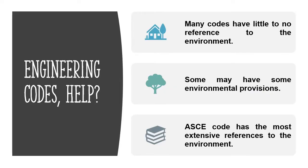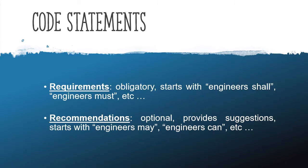The instinct of any good engineer is to seek help on the matter from engineering codes. Unfortunately, many codes do not have a sufficient amount of references to the environmental issues that we are facing today. They may contain some provisions but nothing definitive. The ASCE code is the code with the most environmental considerations and can be used by engineers from any other major as a guide. While reading the code, you will find two types of engineering-related commandments: requirements and recommendations.